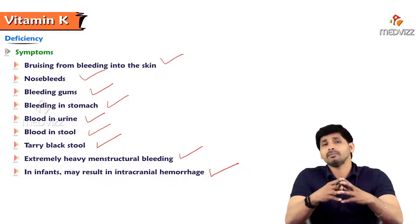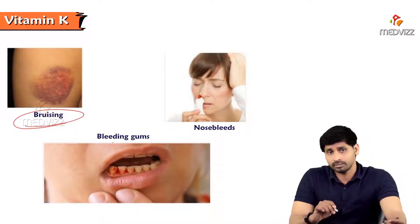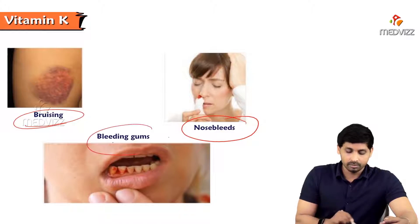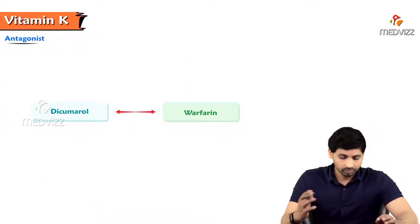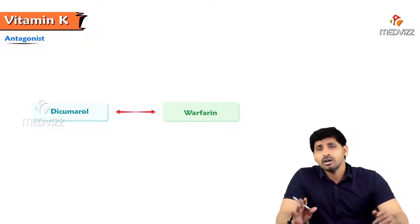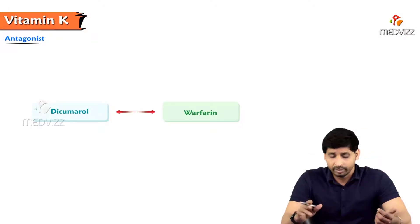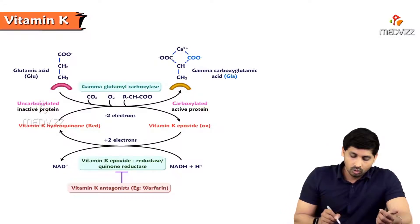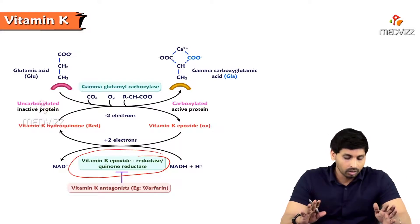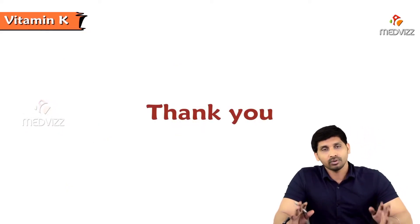For proper blood clotting and to prevent blood loss, you require ample amounts of vitamin K in your body. You can see pictures of bruising where skin appears red, nosebleed, and bleeding gums - all characteristic features of vitamin K deficiency. Regarding antagonists, Dicoumarol and Warfarin are the two antagonists of vitamin K - remember these for MCQs and competitive exams. Warfarin prevents the enzyme vitamin K epoxide reductase, thereby preventing the conversion of active vitamin K to its inactive form and blocking vitamin K activity. That's all about vitamin K. Thanks for listening.